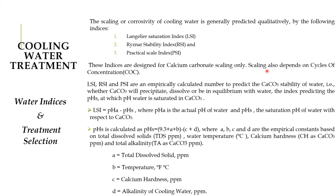These indices are designed for calcium carbonate scaling only. Scaling also depends on Cycle of Concentration (CoC). The Langelier Saturation Index, Ryznar Stability Index, and Practical Scale Index are empirically calculated numbers to predict the calcium carbonate stability of water — whether calcium carbonate will precipitate, dissolve, or be in equilibrium. The index predicts the saturation pH at which water is saturated in calcium carbonate.